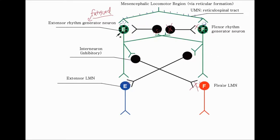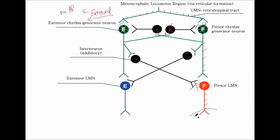The extensor side will be silent — it's fatigued and no action potentials will be seen on that side. But now, because the flexor side is no longer inhibited, it will send the signal down, and you'll see the first contraction of the flexors. In other words, when the extensor side fatigues, you see activation of the flexor side.